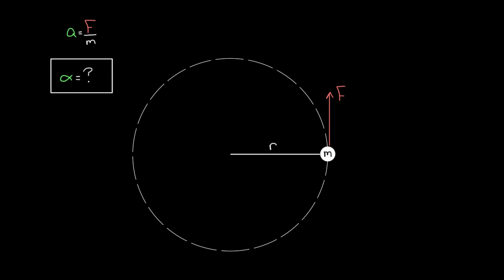We know that the net force has to be equal to the mass of the object times the acceleration of the object. We want to relate torque to the angular acceleration, so let's write down the torque formula. The torque from a force is gonna be equal to the force exerting that torque times R — the distance from the axis to the point where the force is applied. In this case, that's the entire radius, because we applied this force all the way at the edge. So the torque exerted by this force F is gonna be F times R.